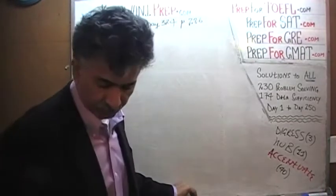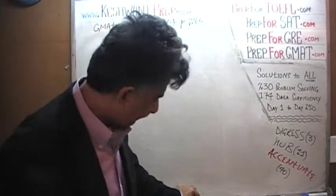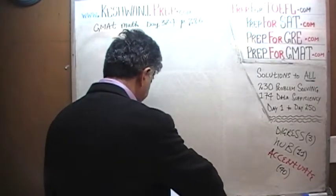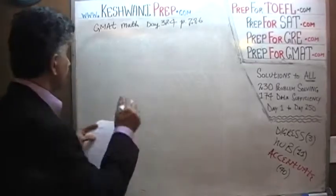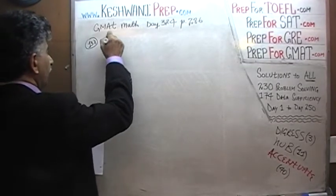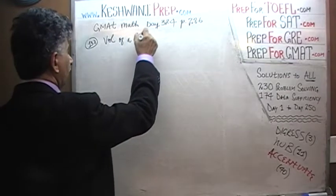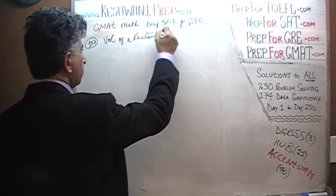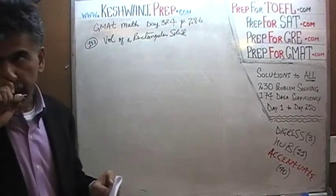Let's see what it has to say. It is simply asking us for the volume of a rectangular solid. The question simply is: what is the volume of a rectangular solid? That's all.